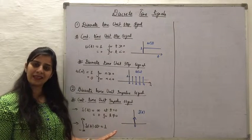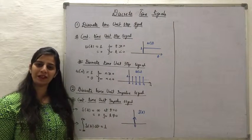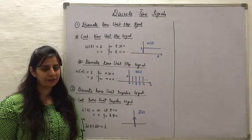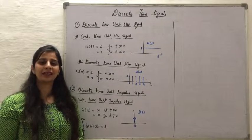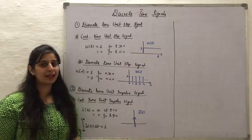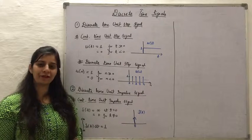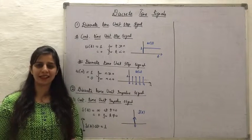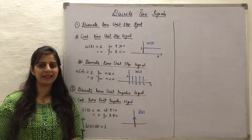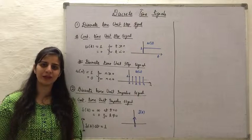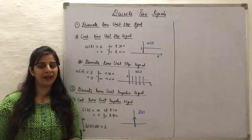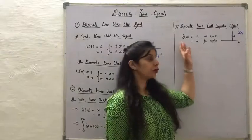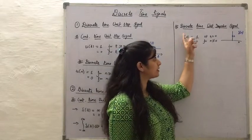From that integration property, we derive the discrete time unit impulse signal. Unlike its continuous counterpart, the discrete time unit impulse signal does not have an infinite value — its value at n equals 0 is 1, and it is 0 for all other time instances.